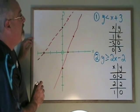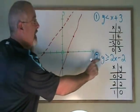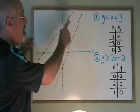So remember, less than or greater than means a dotted line. Less than or equal to or greater than or equal to means a solid line.